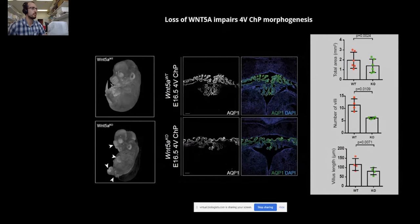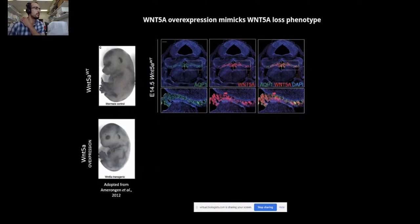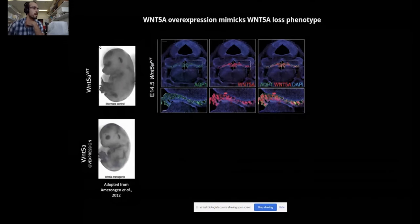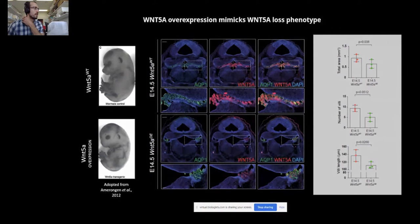To further explore the role of WNT5A in this physiological context, we also employed an additional model for specific induction of WNT5A overexpression. Interestingly, by overexpression of WNT5A, we noticed that the choroid plexus responds with impaired development again, recapitulating our observation in the full knockout model.